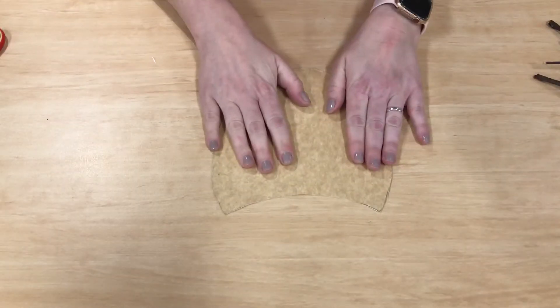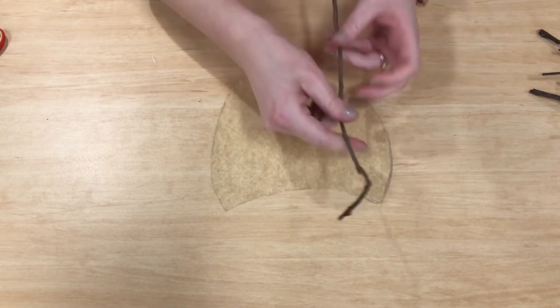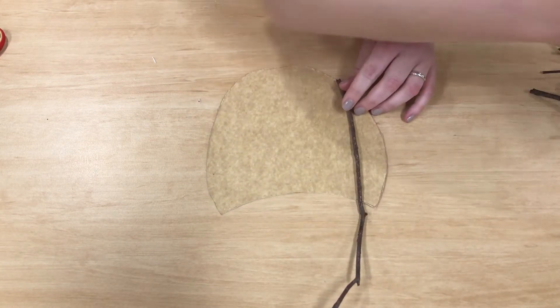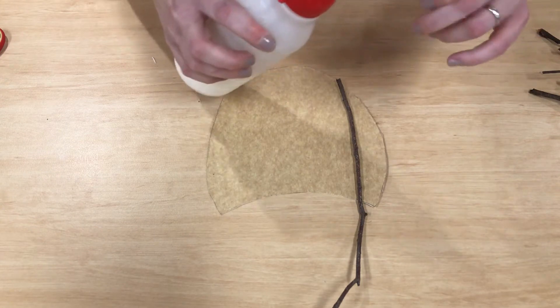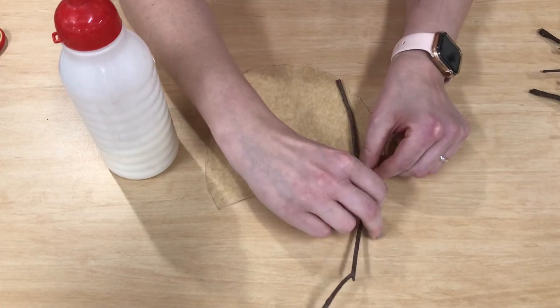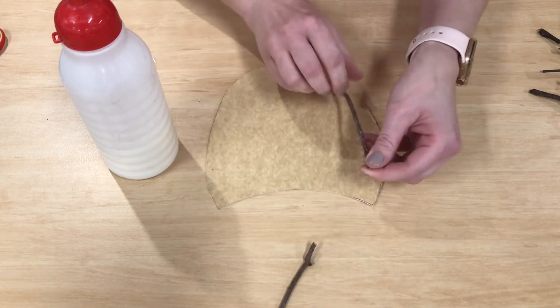Alrighty, so the next step in making our owl is to start gluing on some twigs and sticks. Let's get started. I'm just going to use some PVA glue because it sticks really well. So with the sticks, if they're nice thin ones like this, you can simply break them to the size that you need.